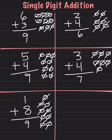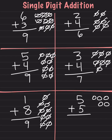Let's try another one. We can do 5 plus 5. So we draw 5 circles: 1, 2, 3, 4, 5. And then we draw 5 more: 1, 2, 3, 4, 5. And we count: 1, 2, 3, 4, 5, 6, 7, 8, 9, 10. And our answer is 10.